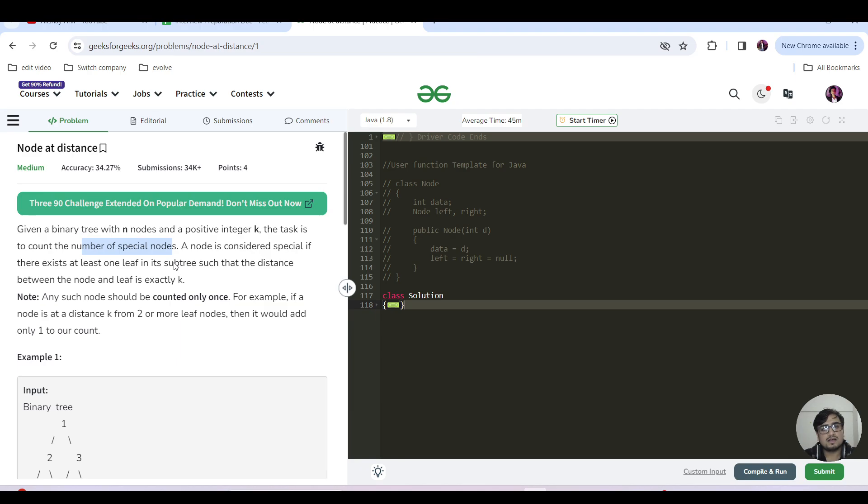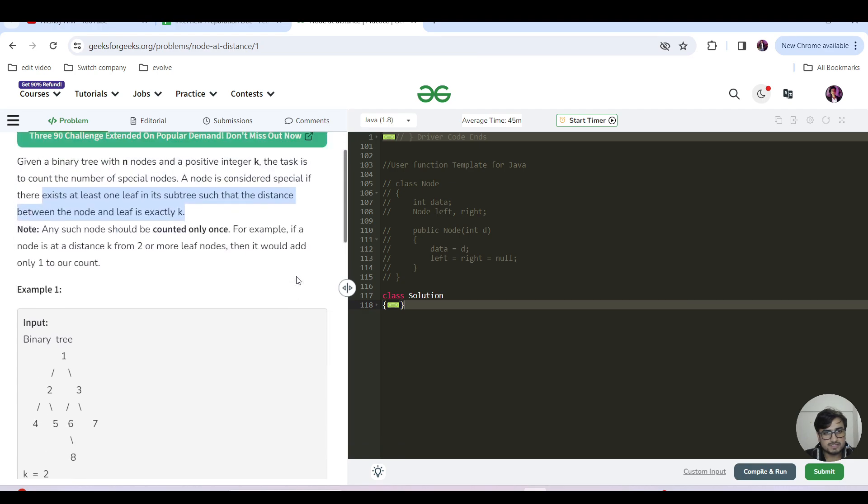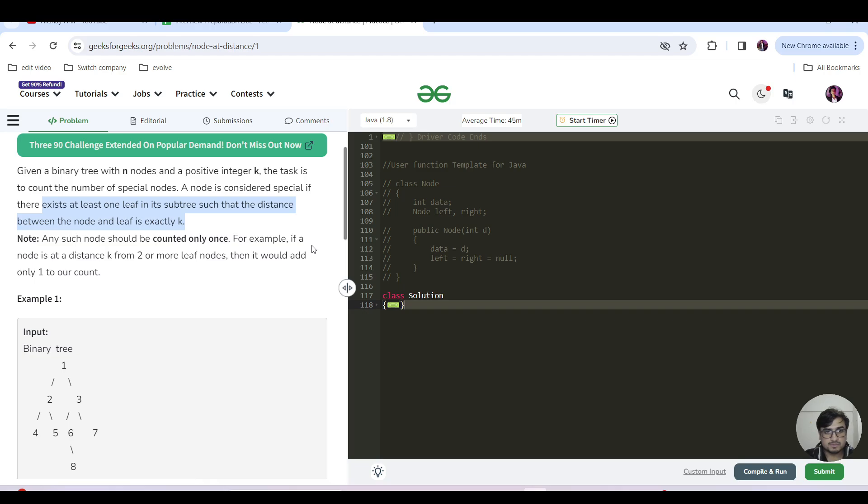Let's see what is the definition of a special node. A node is considered special if there exists at least one leaf in its subtree such that the distance between the node and the leaf is exactly k. Any such node should be counted only once. For example, if a node is at distance k from two or more leaf nodes, we have to consider it one time.